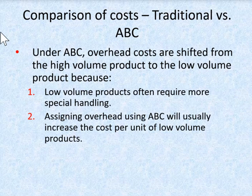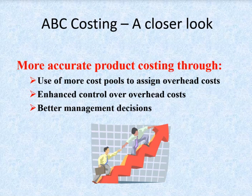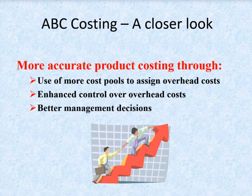One of the big benefits of using ABC versus a traditional costing system is that overhead costs are often shifted from high-volume products to low-volume products. This is because low-volume products often require much more specialized handling — more time, more setups, and so on. By assigning overhead using ABC, the cost per unit of a low-volume product will usually increase relative to high-volume products. Through the use of more cost pools, ABC provides more accurate product costing, enhanced control over overhead costs, and better management decisions.